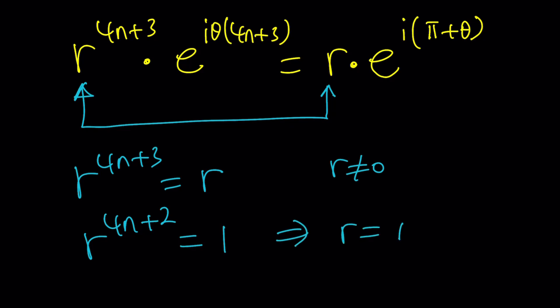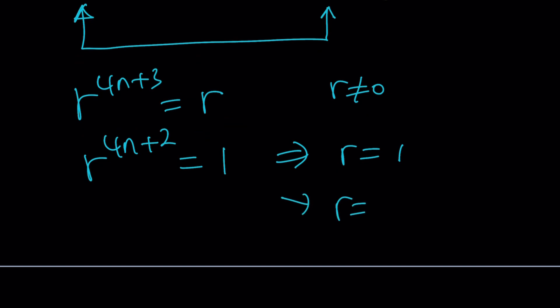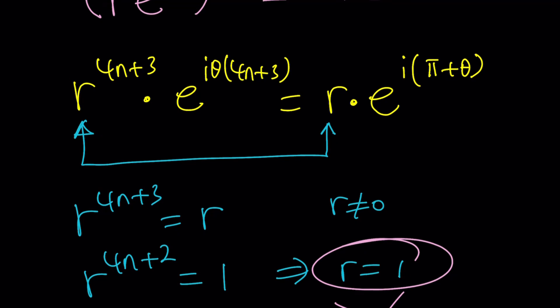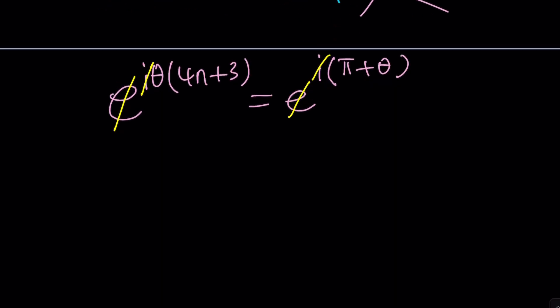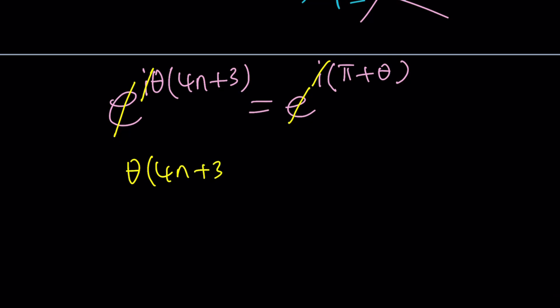But you could also get r equals negative 1 right? Well wait a minute. r is the absolute value. It's a real number that cannot be negative. So r equals 1 is the only answer. That's kind of nice because now we got rid of the r's so we ended up with e to the power something. So let's go ahead and write that down again. E to the power i theta multiply by 4n plus 3. Remember we had raised it to that power. And then e to the power i times pi plus theta. Of course when you set these equal to each other i is going to cancel out. E is going to cancel out. And then we're going to have the following.